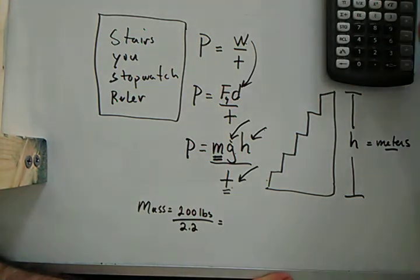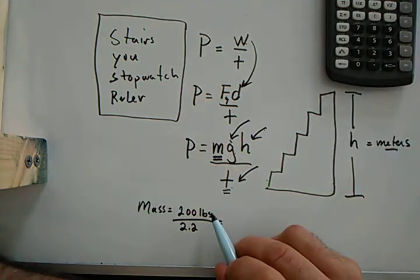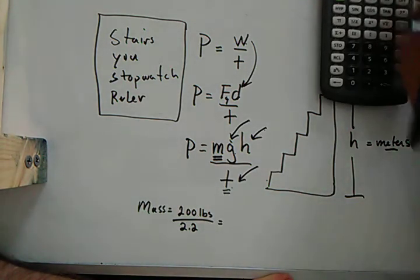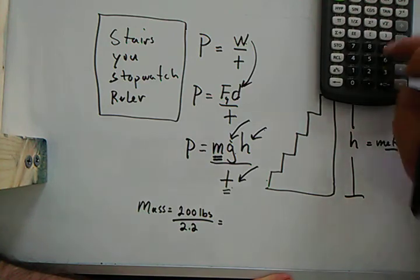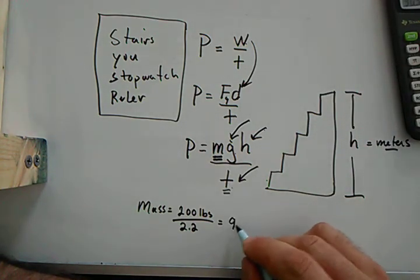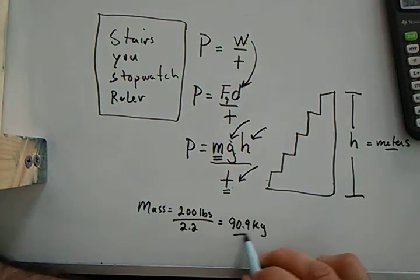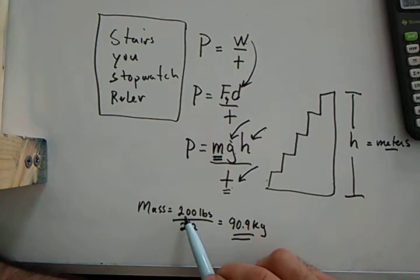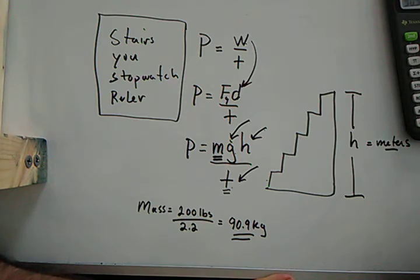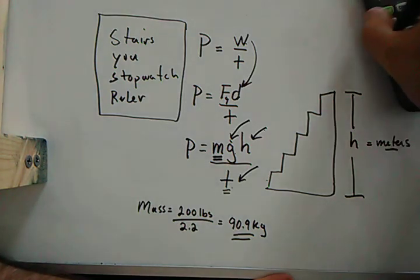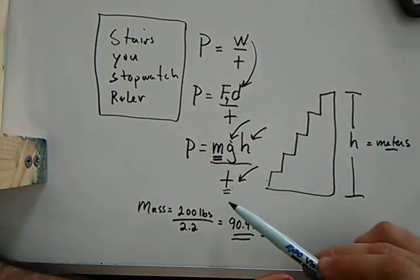All I'm going to do is divide it by 2.2 to get the mass in kilograms. So let's say you weigh 200 pounds. I will just take a calculator: 200 divided by 2.2. Now, so my mass, if I were to weigh in at 200 pounds on the scale, my mass would be 90.9 kilograms.